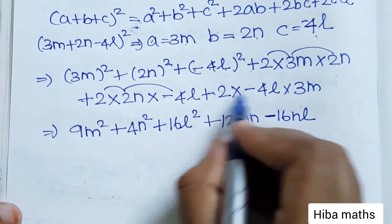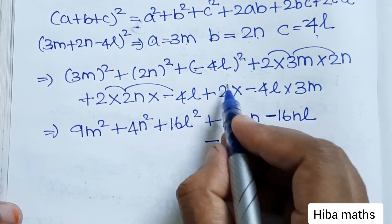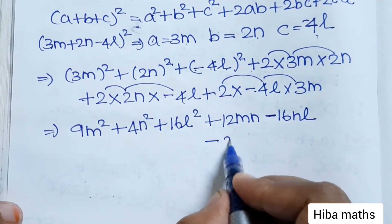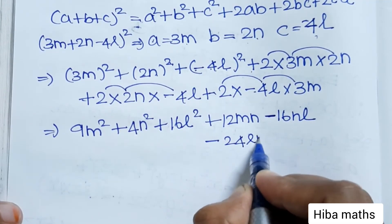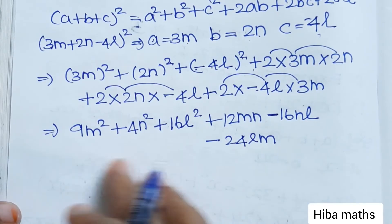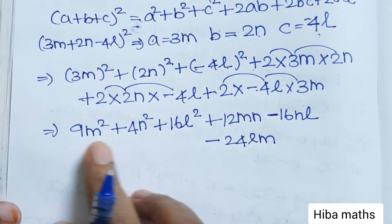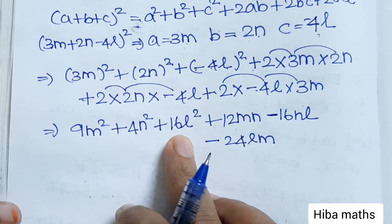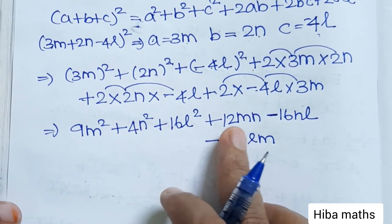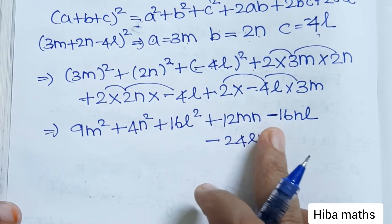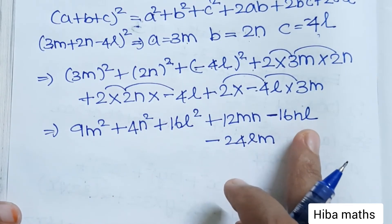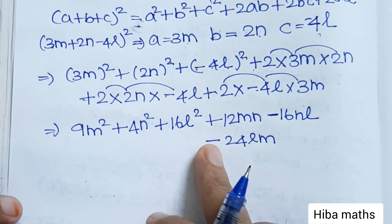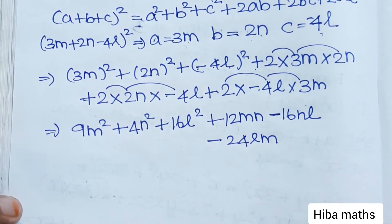Now plus or minus gives minus: 2×4×3 = 24lm. So this is the area value: 9m² + 4n² + 16l² + 12mn − 16nl − 24lm.